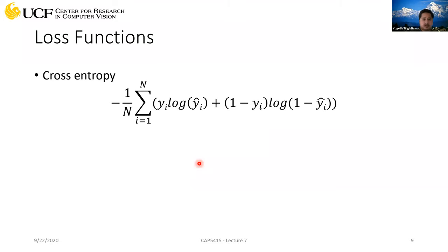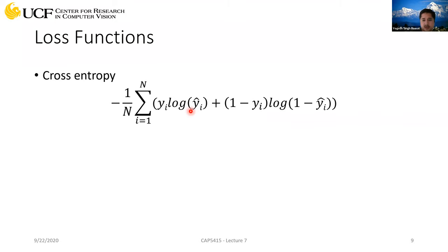There are many loss functions and we won't cover all of them. We'll talk about the ones relevant to the problems we're solving — for segmentation, for action detection, etc. Today we'll only talk about cross entropy. This loss function is mainly used for classification problems — if you have an image or video and want to predict what action is being performed or what object is present. For that kind of classification or recognition problem, cross entropy is a standard loss function.